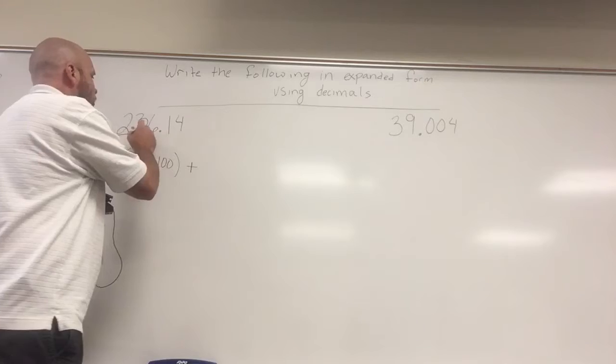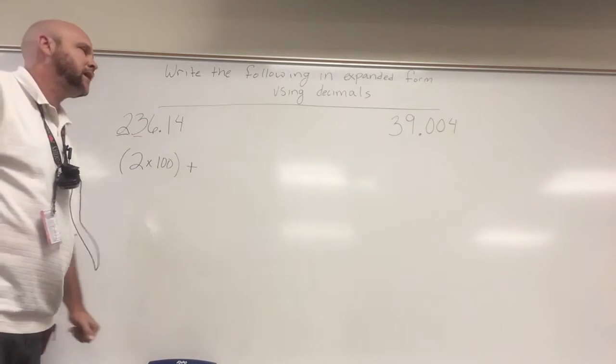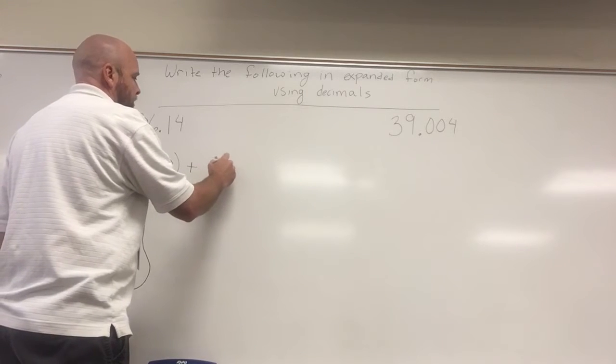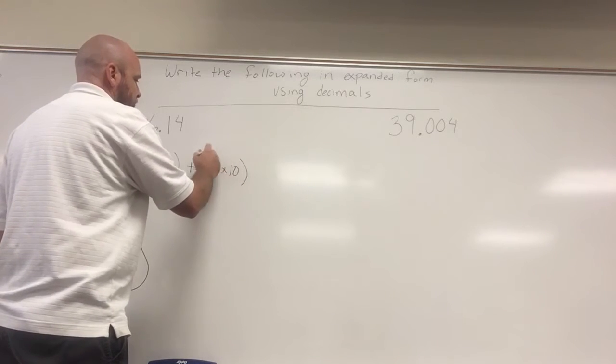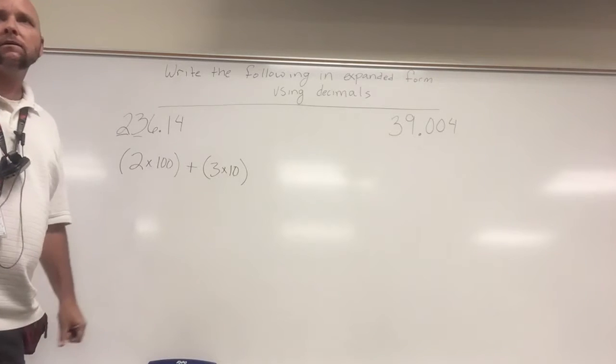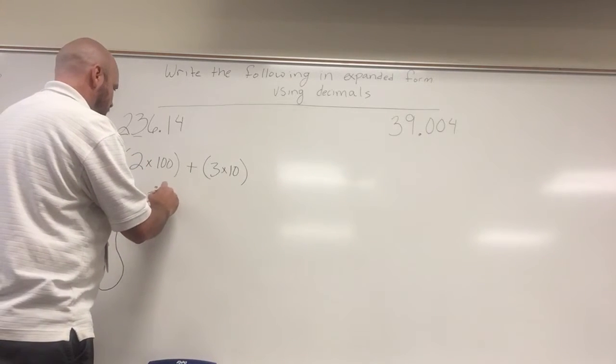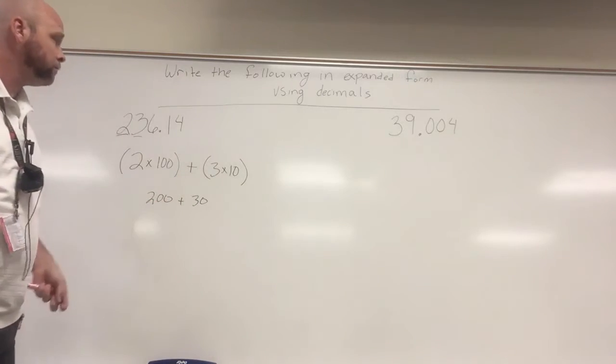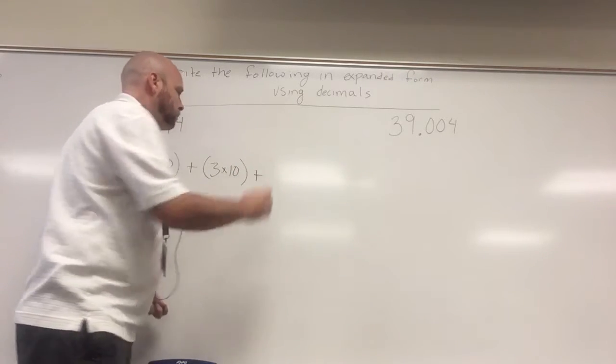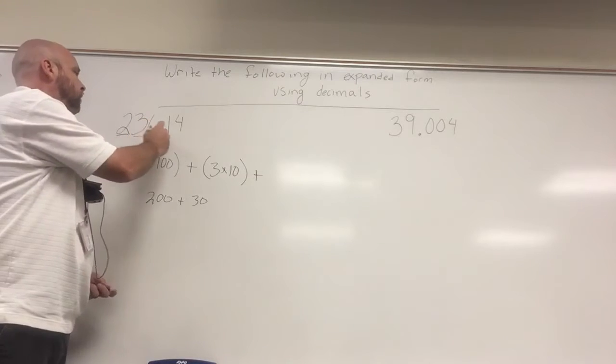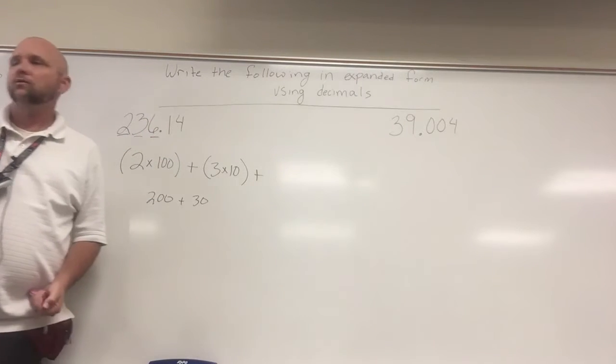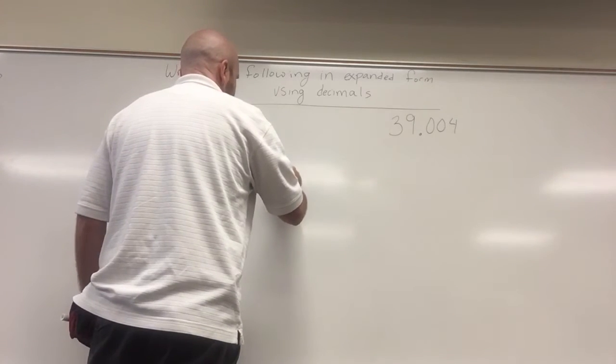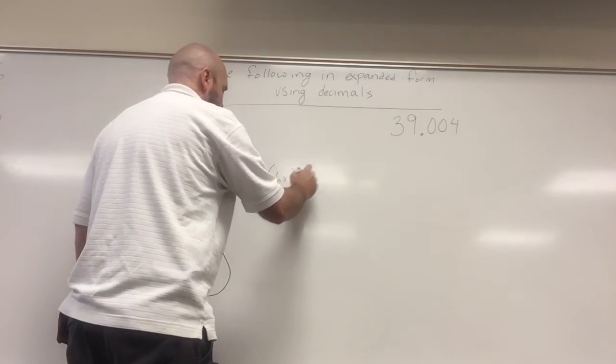Plus, Simone, what place value is the three in? The tens place. So I have three tens or three times ten, which would be 30. If I wanted to write it in the normal form, it would be 200 plus 30. And I'm just solving it there. Plus. Simone, what place value is the six in? The ones place. So I have six times one, which is six.